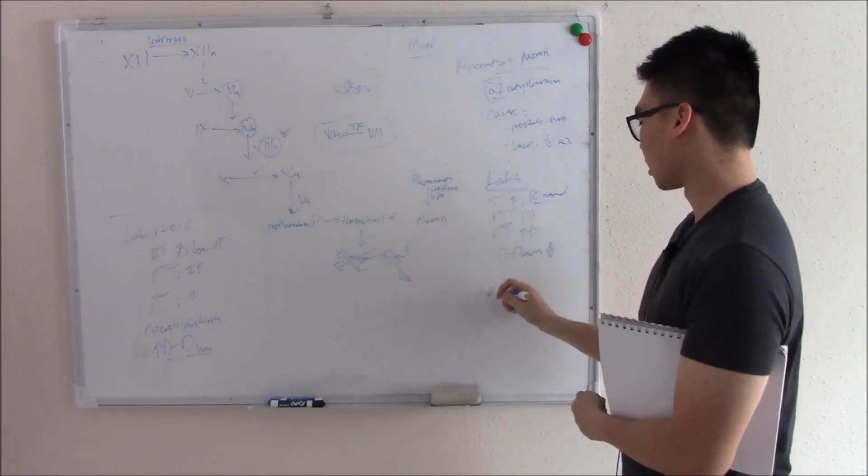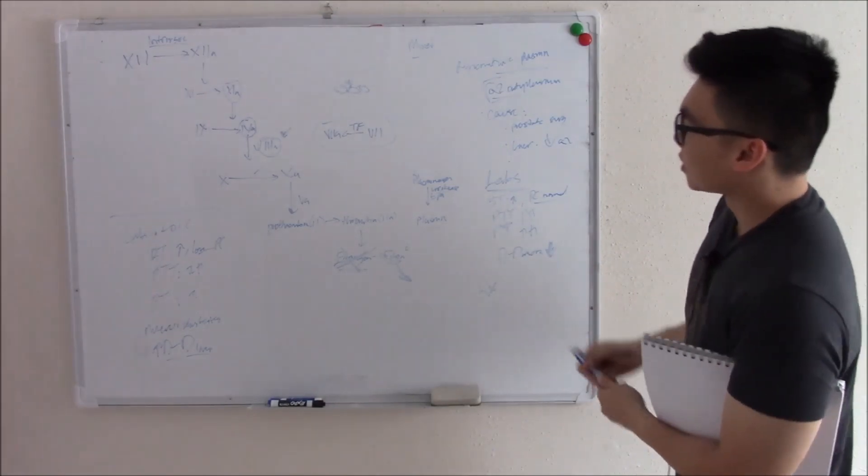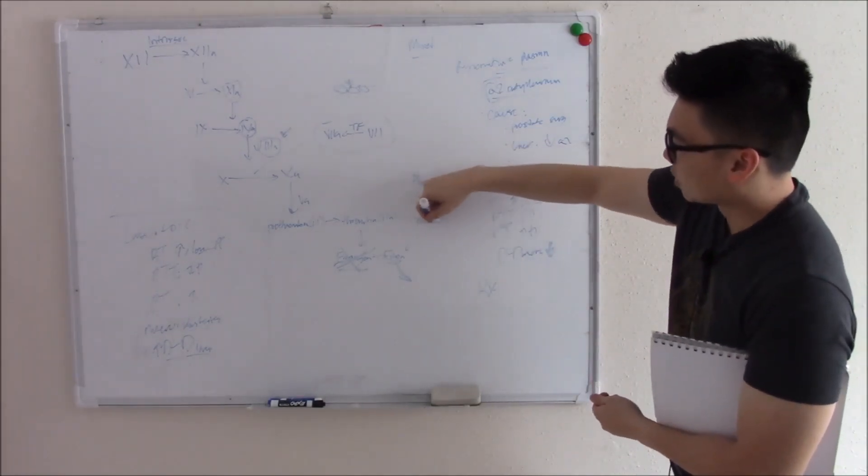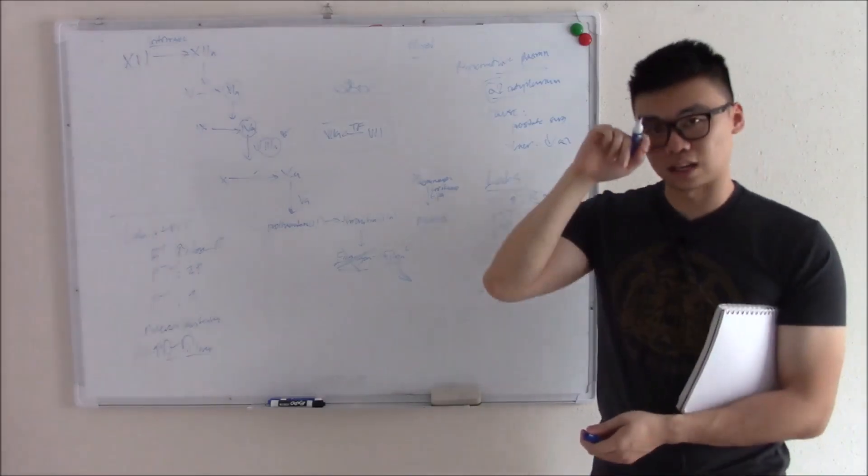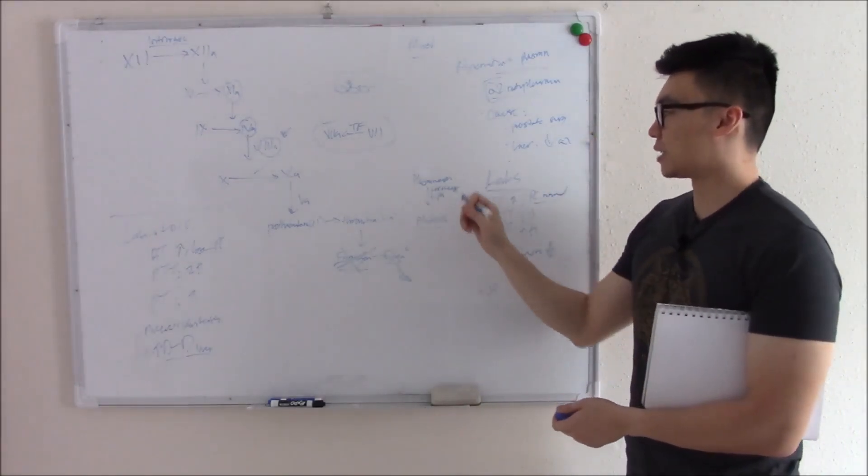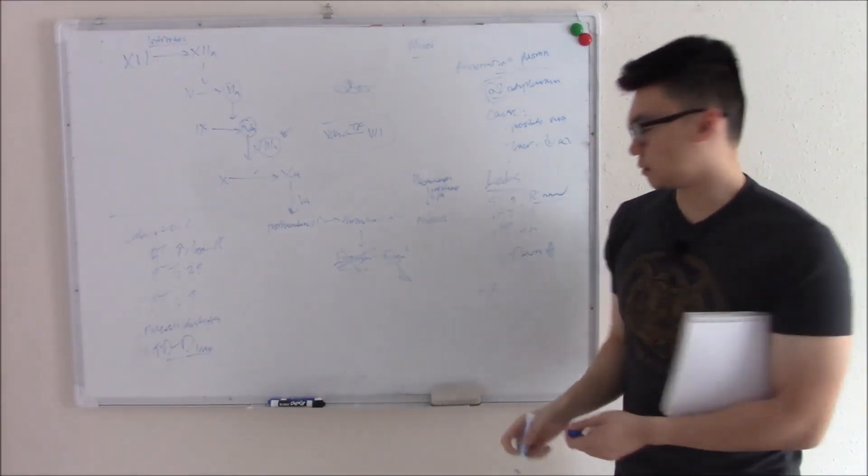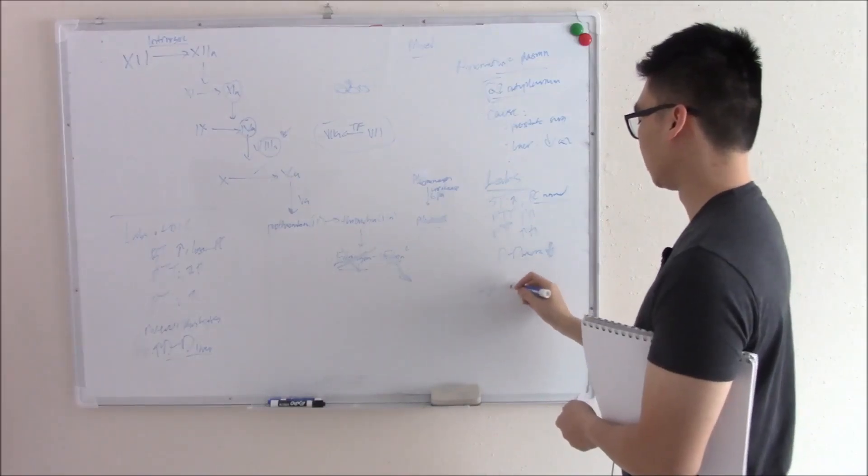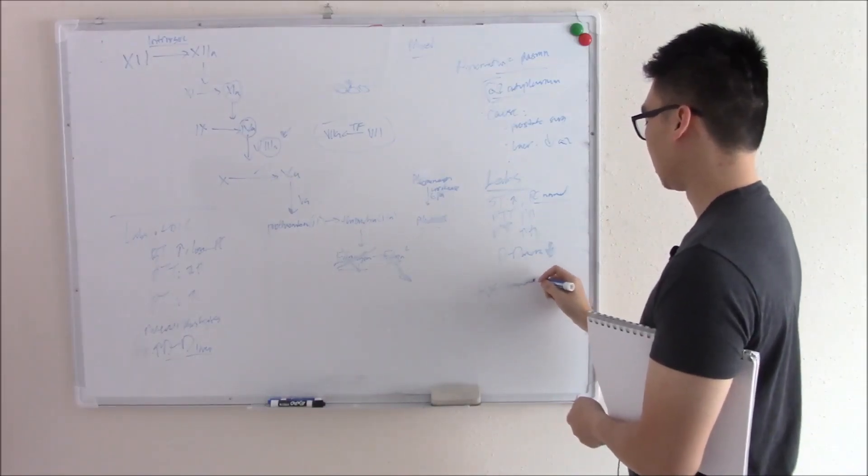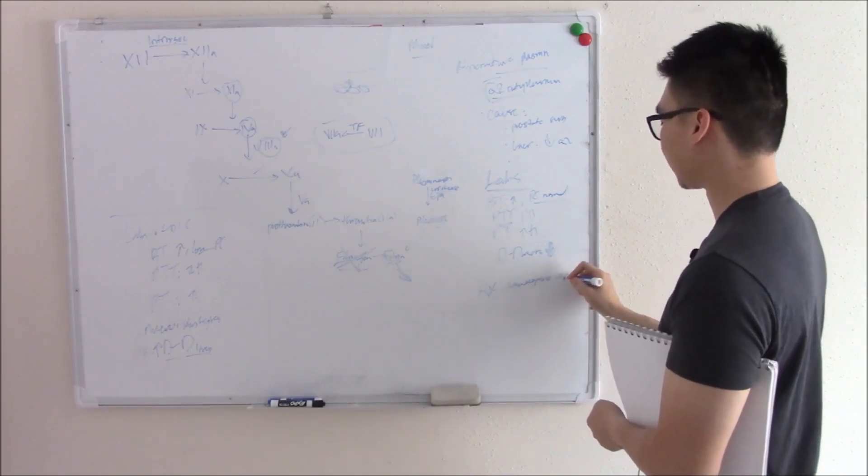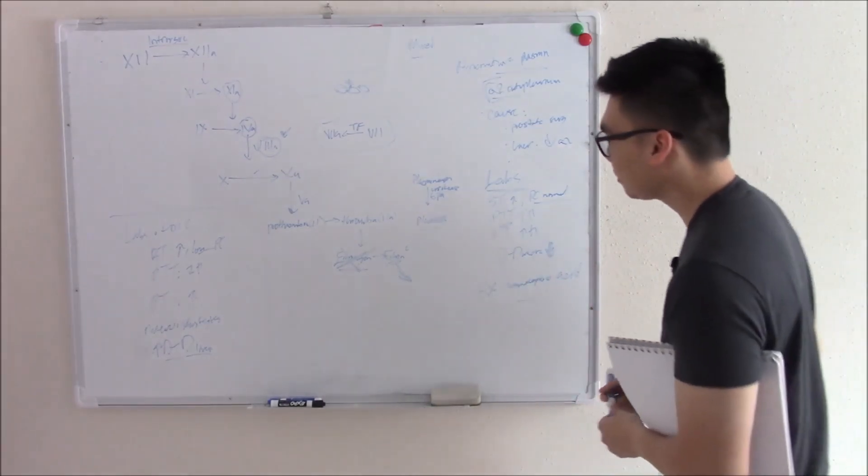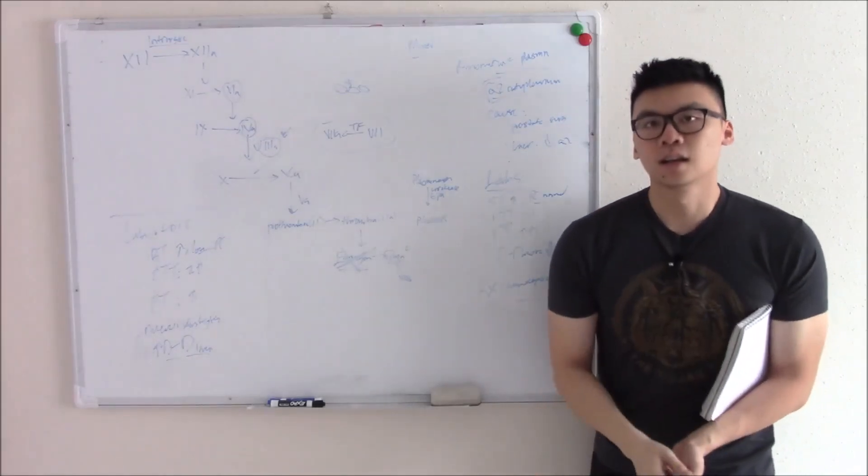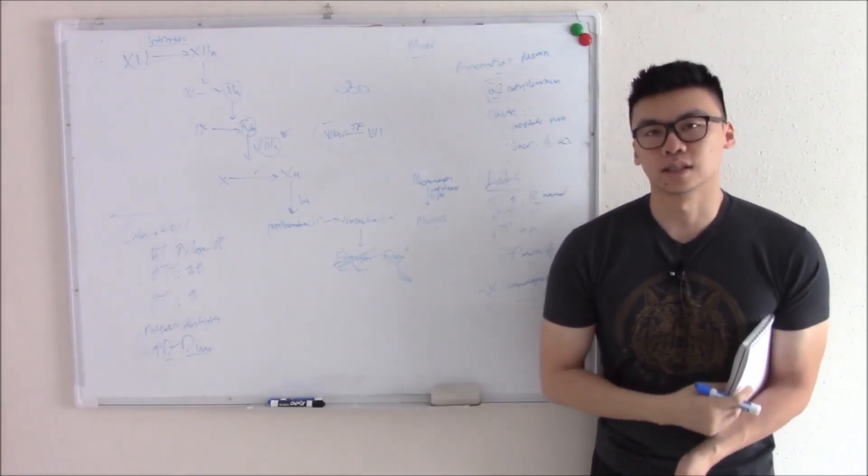How do you treat this disorder? You want to stop the formation of plasmin. There's a drug we talked about in our last video that stops the conversion of plasminogen into plasmin. Do you remember what that is? That's your aminocaproic acid. Very good. That is deficiencies and coagulation factors. I hope you enjoyed the video. See you next time.